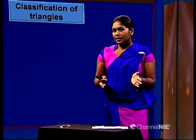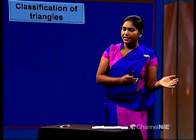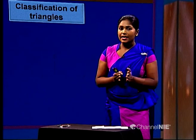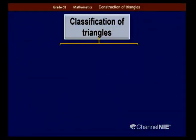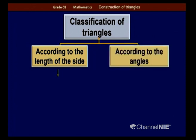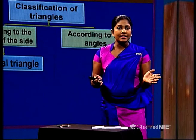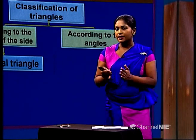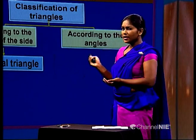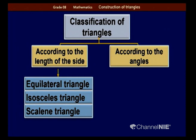In previous grades — grade 6 and 7 — you learned about triangles and classified them according to their angles and sides. Classification according to the length of the sides: equilateral triangles, where all sides are equal; isosceles triangles, where two sides are equal; and scalene triangles, where all sides are different.